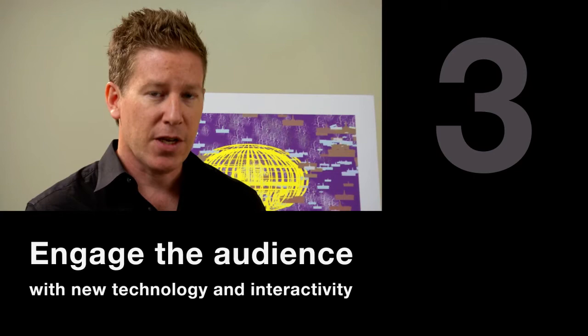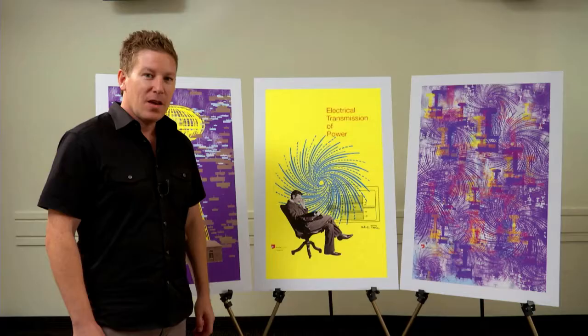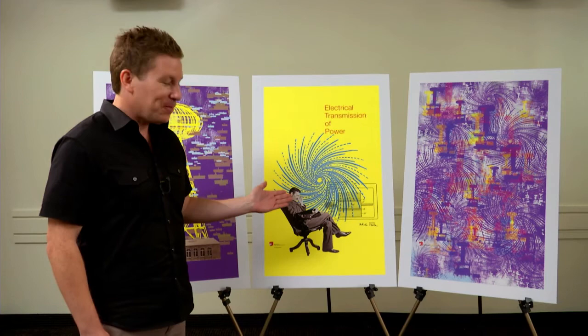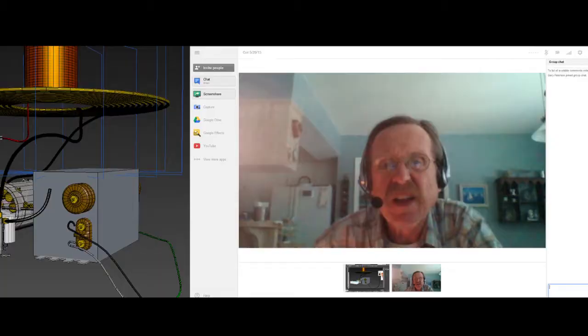This will be the first ever augmented reality app to honor Nikola Tesla. Currently there are three posters as you see here: the Wardenclyffe Tower, the Nikola Tesla bio, and how a Tesla coil works.